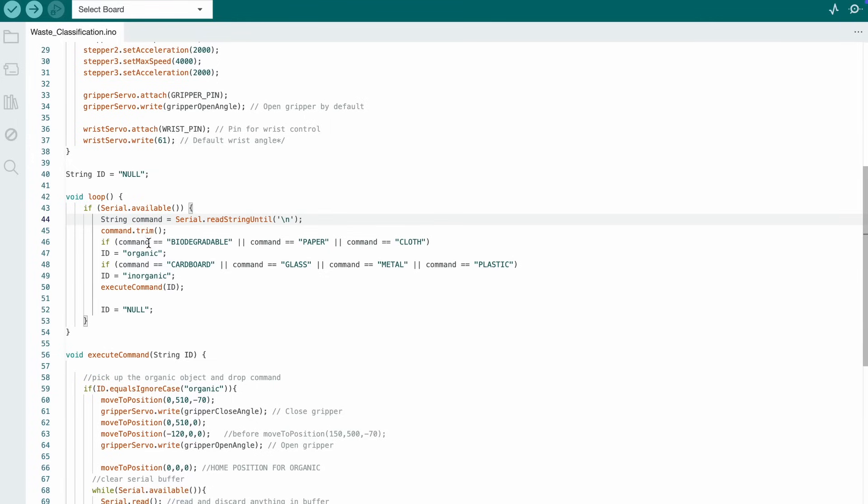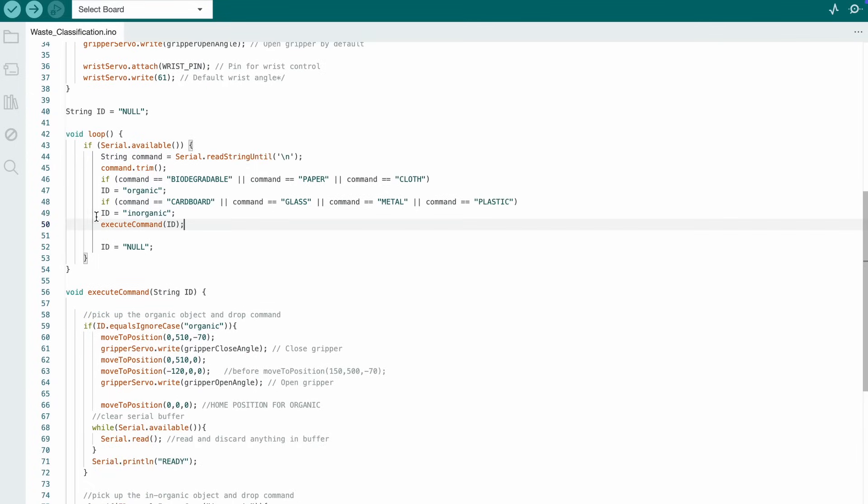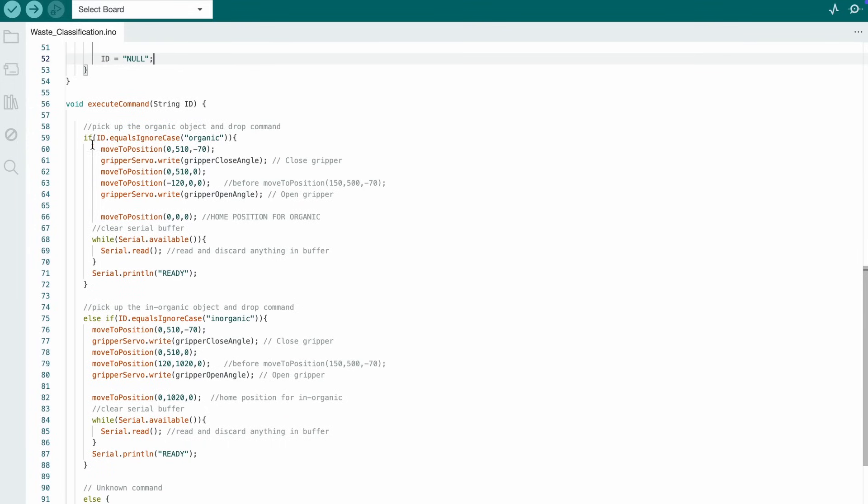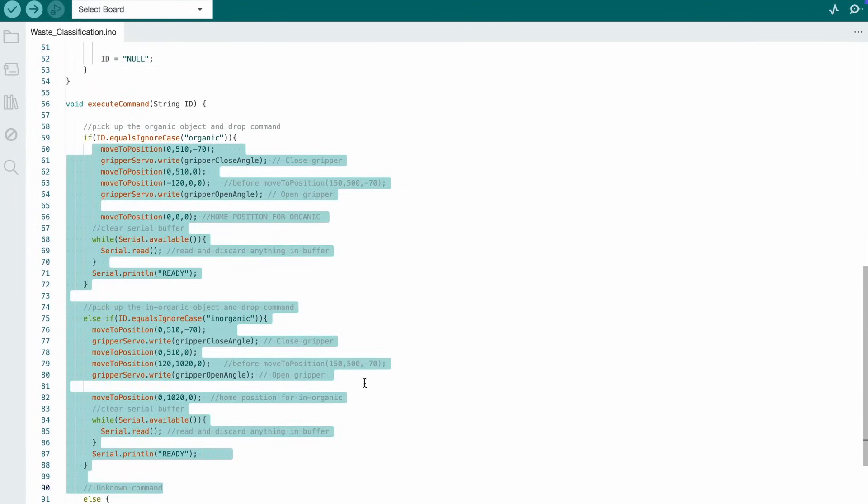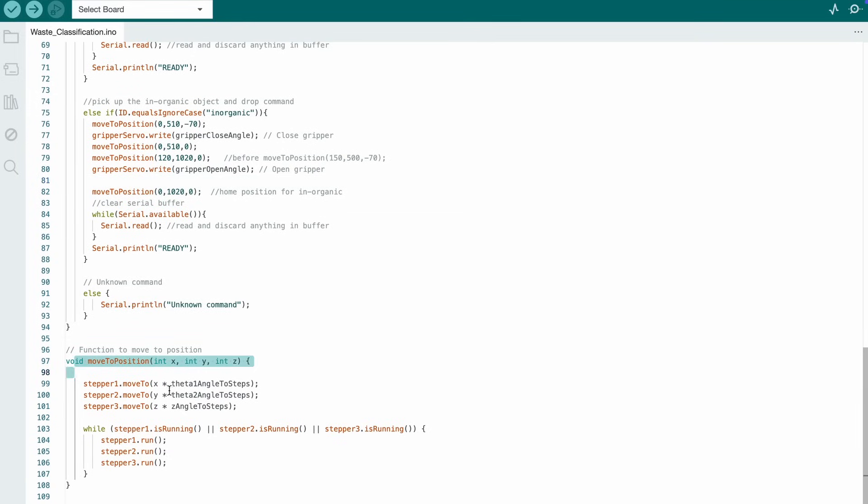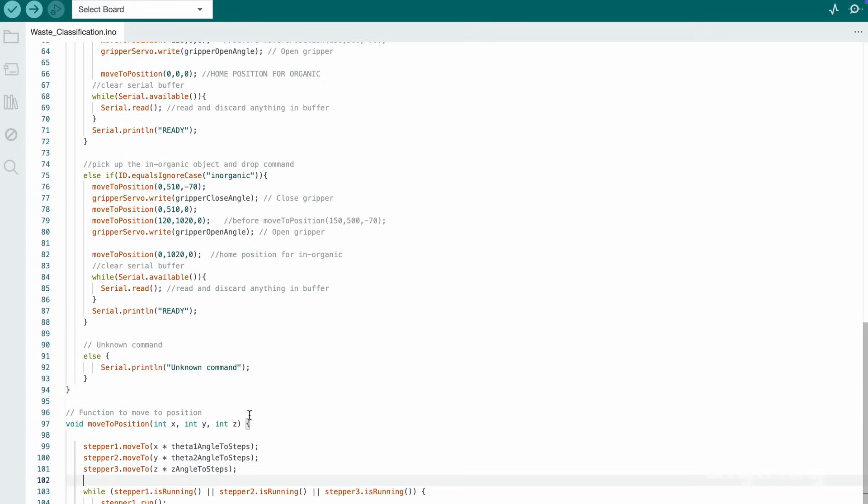Whenever a message indicating the detected object is received, the controller will assign it to the organic or inorganic category based on the detected object. After that, it will call the execute command function, which will then control the robotic arm to pick up the object and place it in the appropriate bin using the move to position and set gripper functions. This will repeat for every object that is detected by the camera.